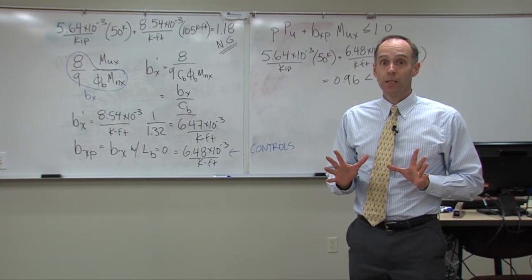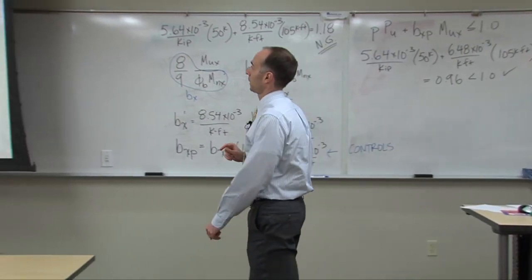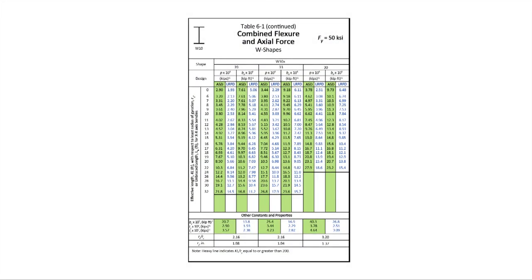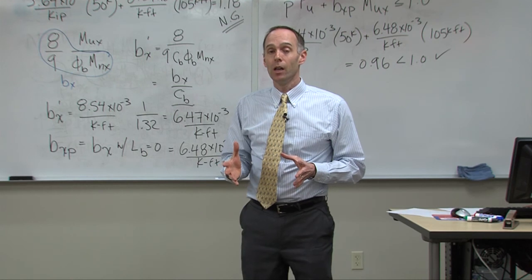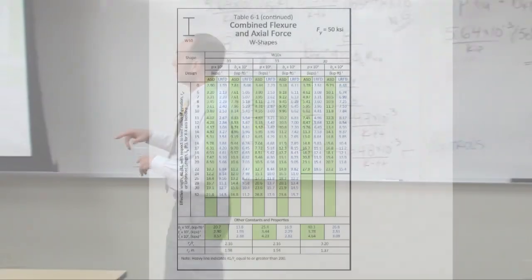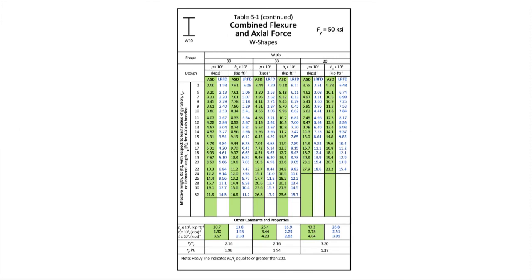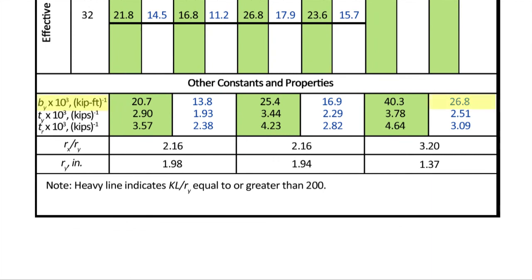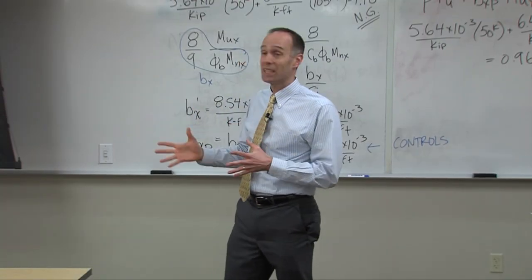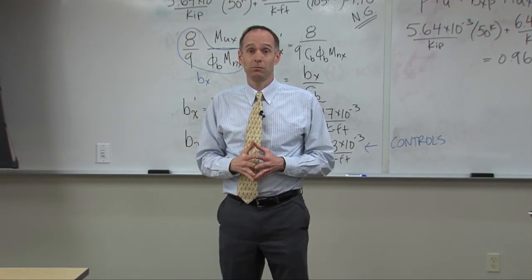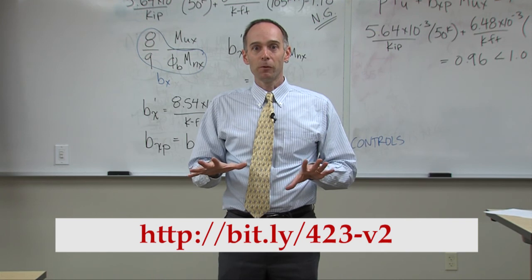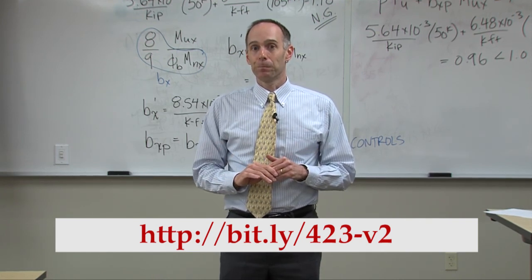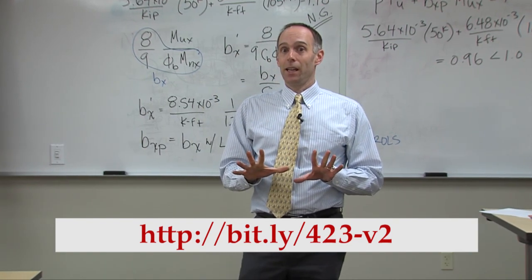The last thing I want to talk about is BY. I haven't said much about BY, but if you look in this table, here's a good exam question: BX and P depend on length — you have to look up the effective length or unbraced length in the table — but BY does not. If you look up the BY value for the W10 by 30 in Table 6-1, it's at the bottom and it's just one number, meaning it doesn't depend on length. Why is that? Why can we find BY without knowing the beam length? Go to the URL shown and type in your answer, then pause while you do that.